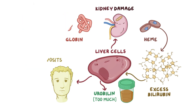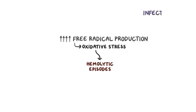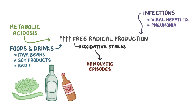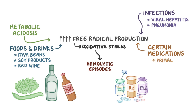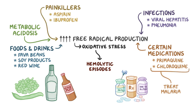There is a long list of things that could increase free radical production, and when there are too many free radicals for the body to handle, it's called oxidative stress, which leads to hemolytic episodes. These include infections like viral hepatitis or pneumonia, metabolic acidosis, and foods and drinks like fava beans, soy products, red wine, and others. Also, certain medications can act as oxidative stressors, like primaquine and chloroquine, which are ironically used to treat malaria. Other common drugs include painkillers like aspirin and ibuprofen, quinidine used to treat arrhythmias, and other drugs that contain sulfonamide, like the antibiotic trimethoprim.